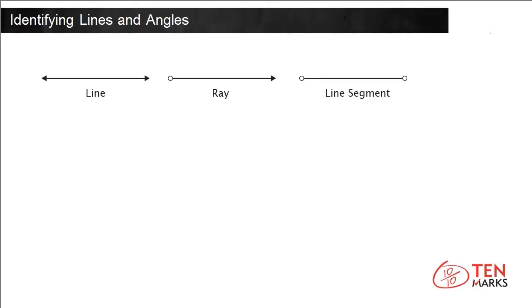A line is a set of points that extends forever in both directions. It does not curve or turn, and it is always straight.